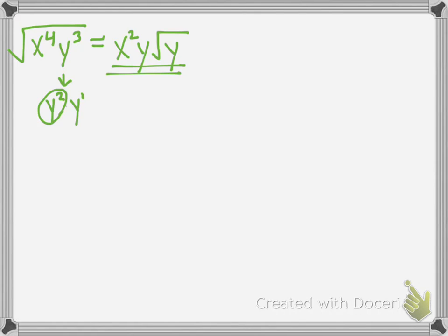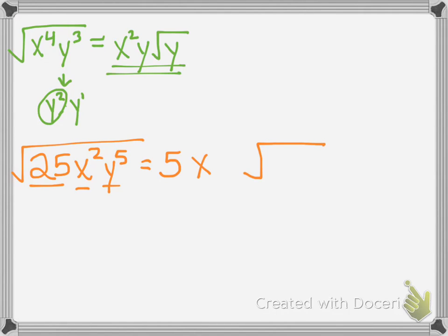Say we had the square root of 25x squared y to the fifth. Now we have a number in there, but that's okay, we do the same thing. But again, we think of numbers separately, x's separately, y's separately. Everything is separate. So 25 is a perfect square, so the 5 can totally come out. x squared is a perfect square, so 1 comes out. The square root of x squared is just x.